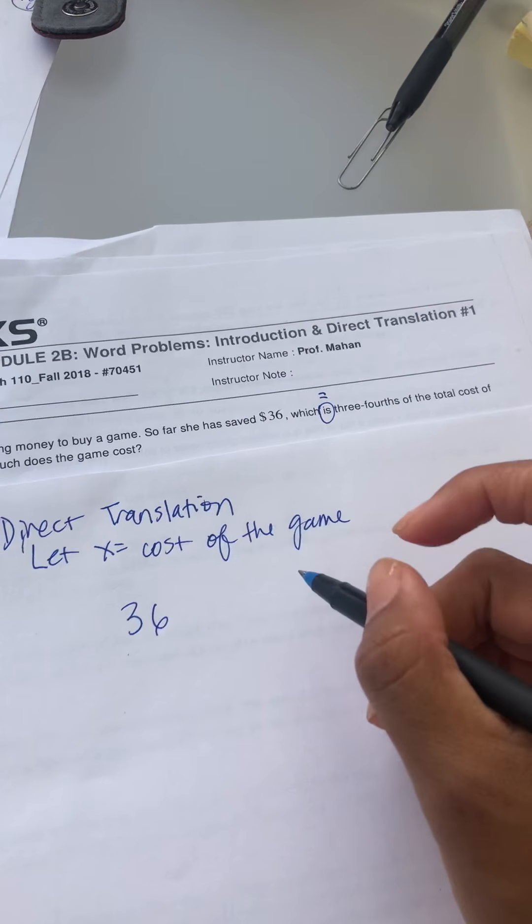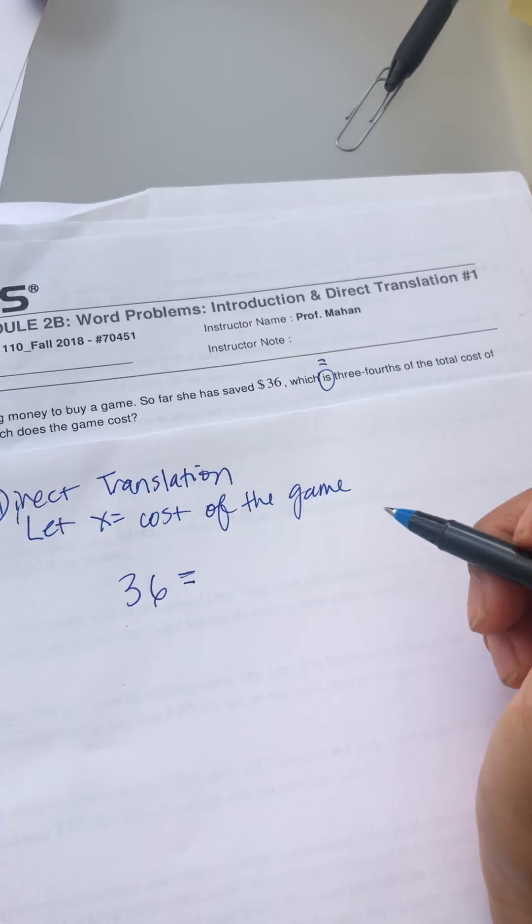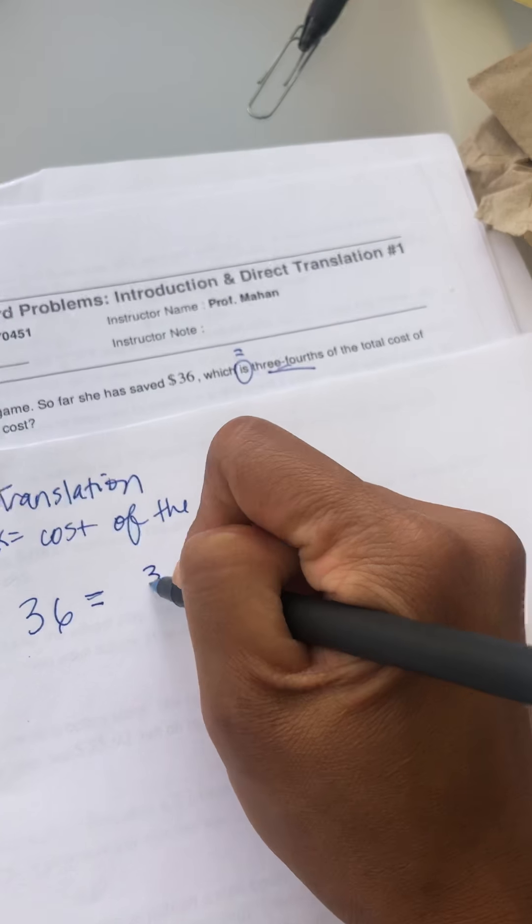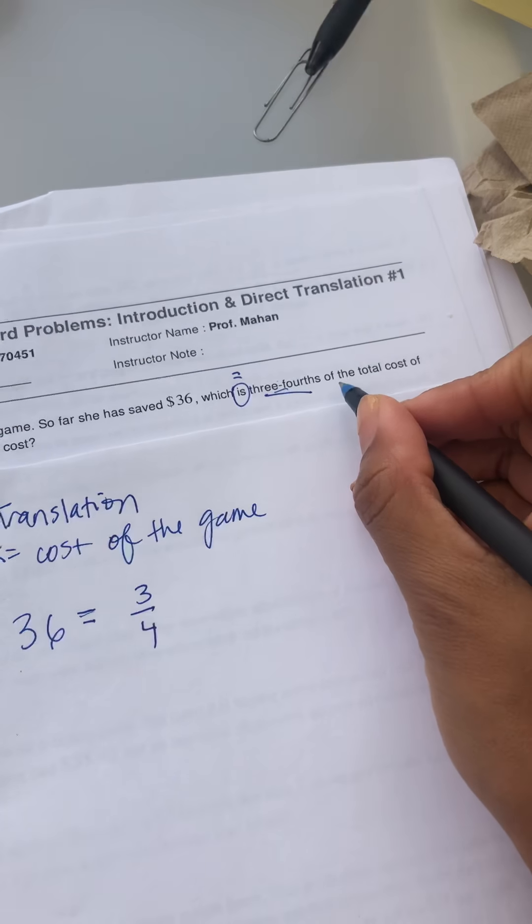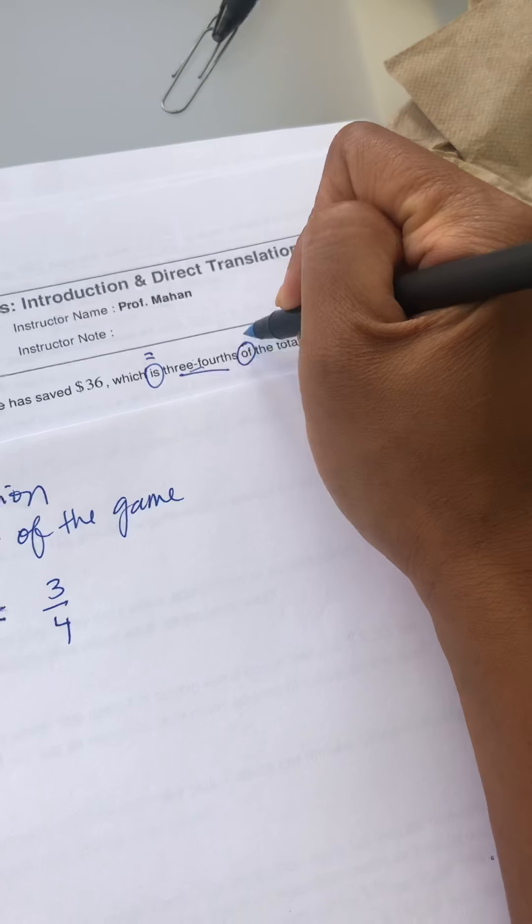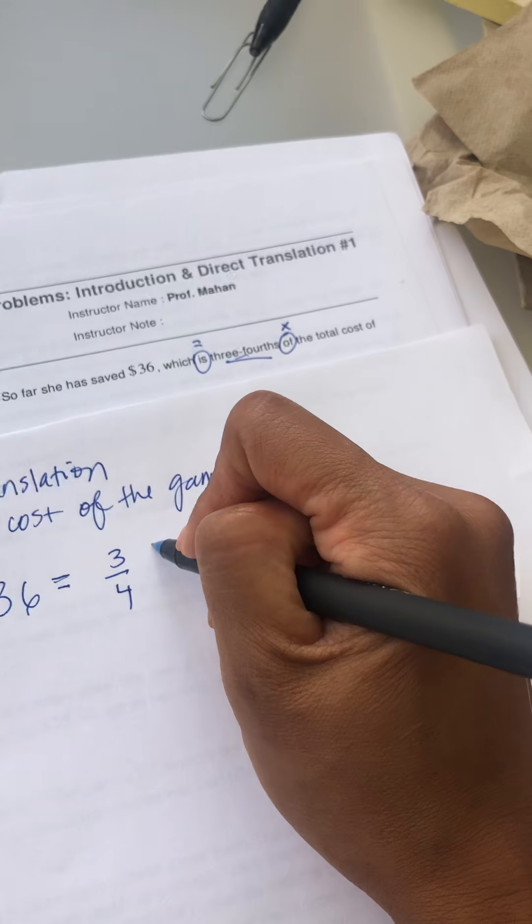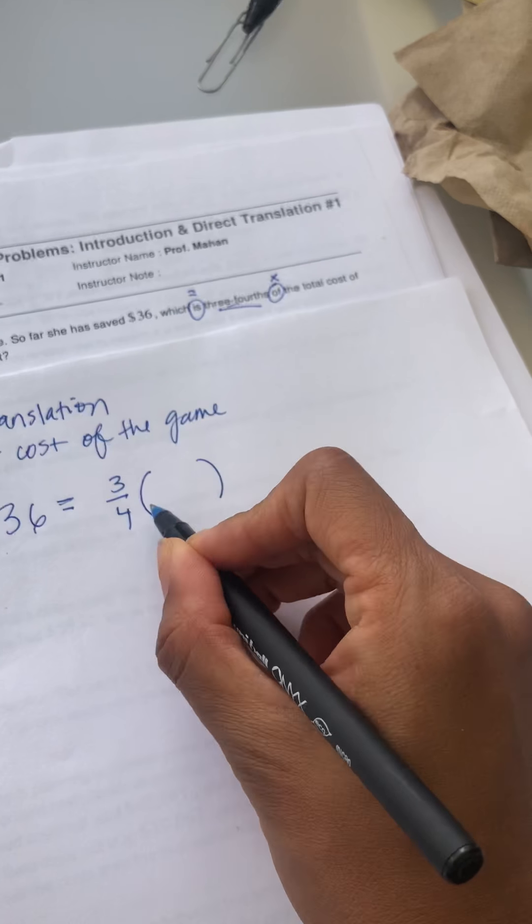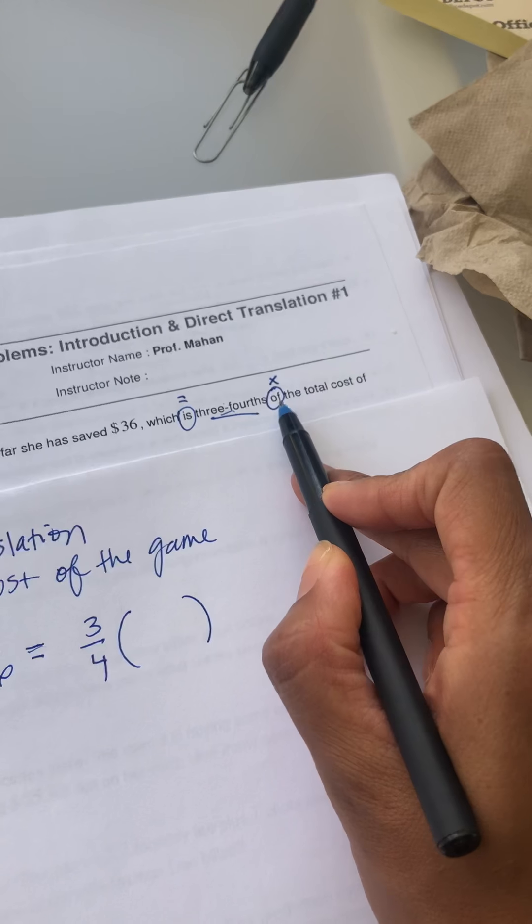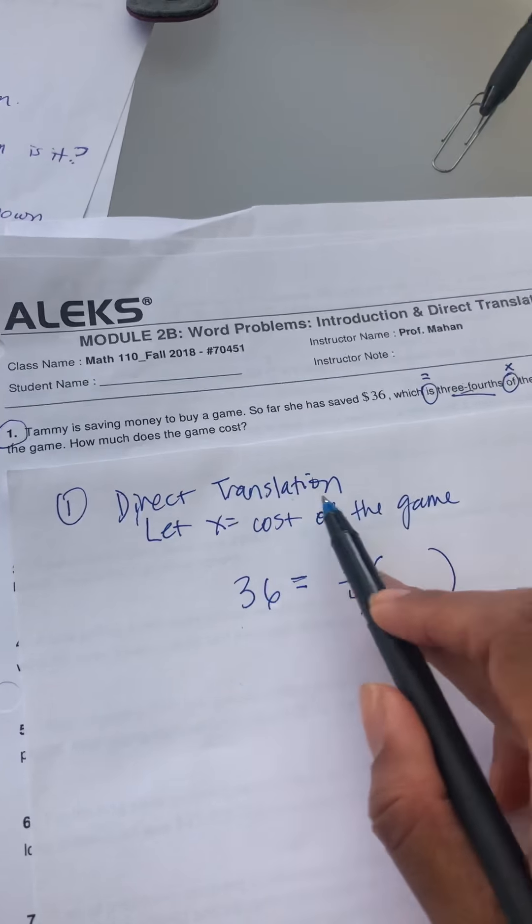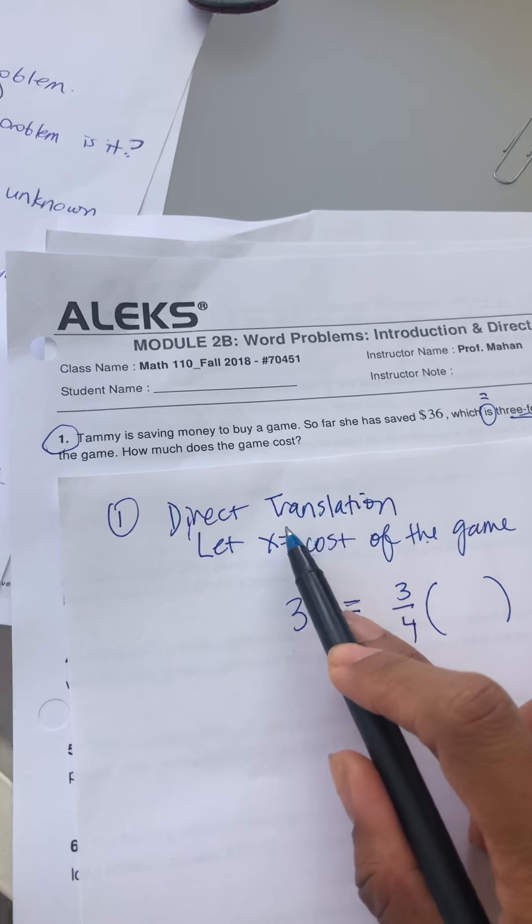Which is three-fourths, so three-quarters. The word 'of' means multiplication in math, so three-fourths of, I'm going to put parentheses next to it because it's multiplied, which is three-fourths of the total cost of the game.